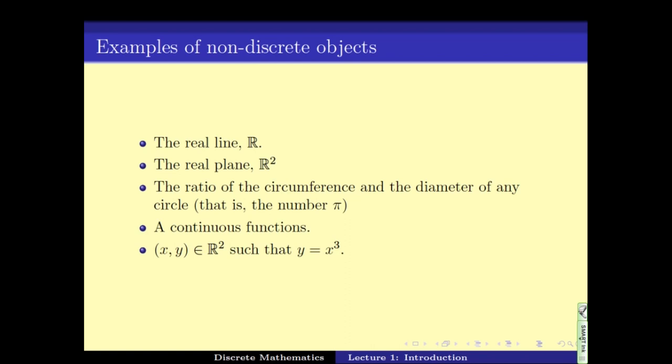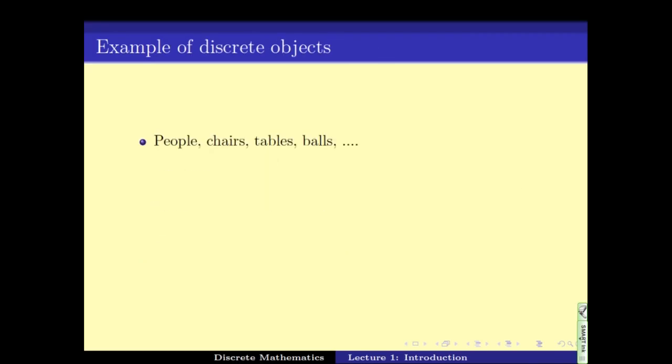Now, what are discrete objects? Things that we see around us, objects like people, chairs, tables, balls, etc. They are discrete objects.